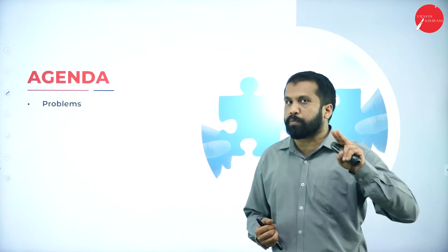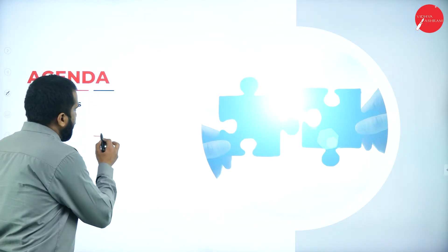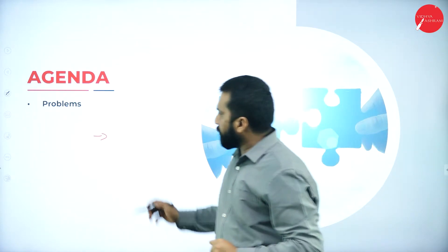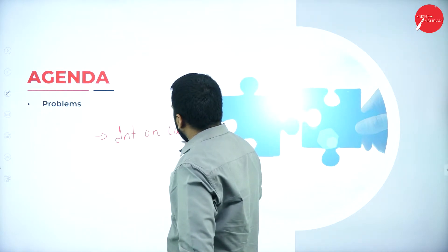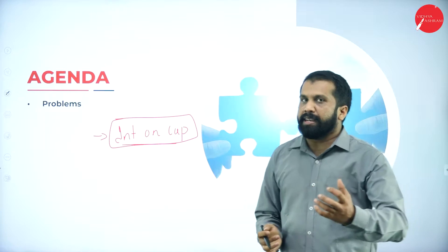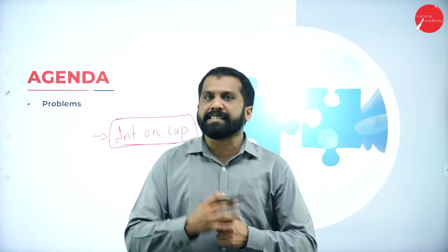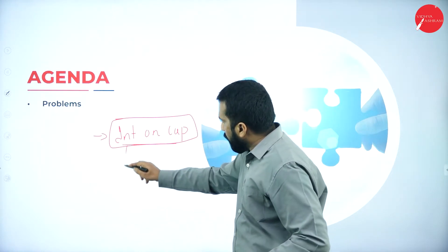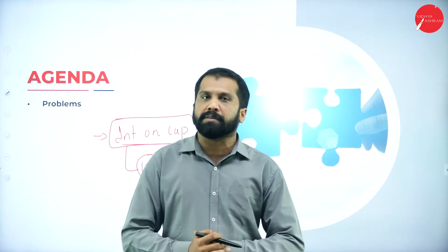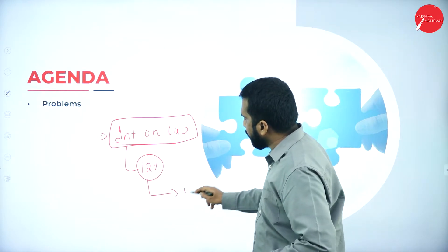In today's session we will go through two problems. Before we begin, remember: all benefits given to partners should be considered as inadmissible and are supposed to be added. For interest on capital, up to 12% it is permissible and allowed for partners.